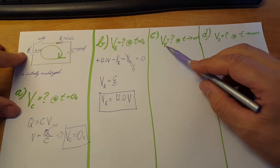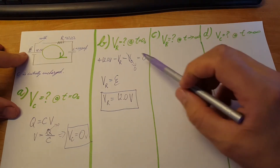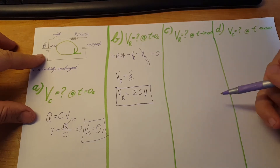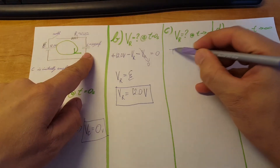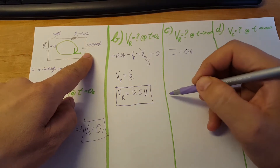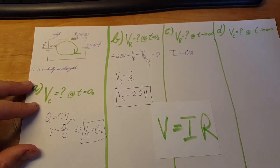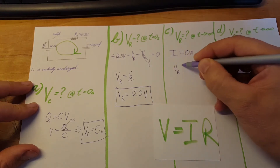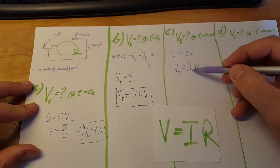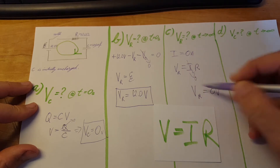Part C: voltage across the resistor a long time after the switch is closed. At this point the capacitor is fully charged, so current is no longer flowing — I = 0 amps. Using V = IR, VR = IR = 0, so the voltage across the resistor is zero volts.